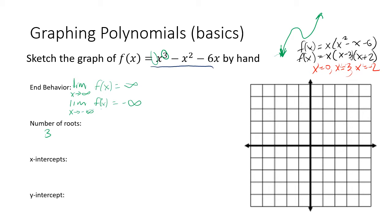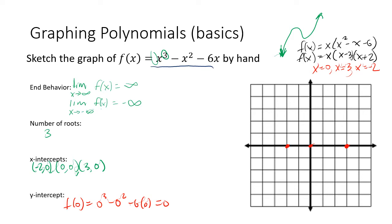The x-intercepts are at (-2, 0), (0, 0), and (3, 0), so we can plot those on the graph right now. It's also easy to find the y-intercept: f(0) = 0³ - 0² - 6(0) = 0, which makes sense because (0, 0) is both an x-intercept and a y-intercept.